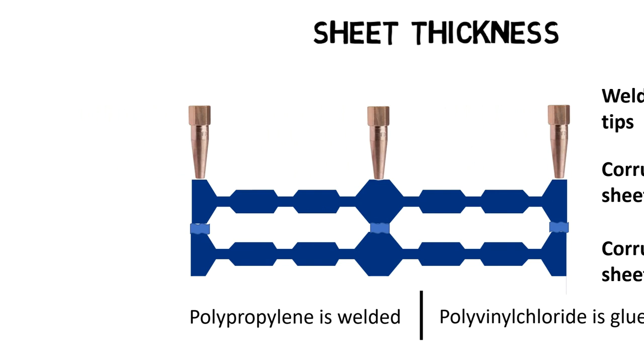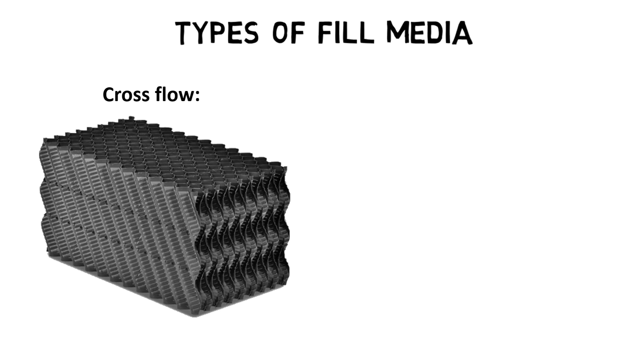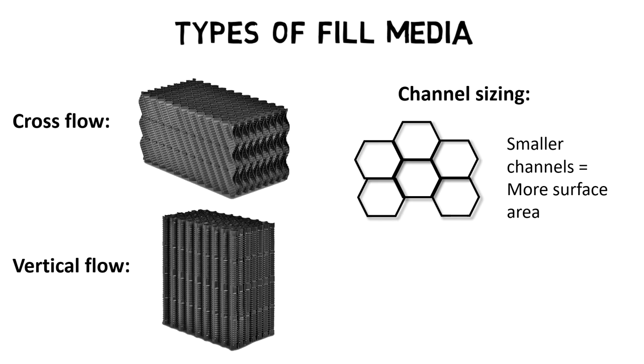Depending on the application and degree of wastewater pollution, several different plastic fill media designs are available. In general, they are divided into two categories: cross flow and vertical flow. Within the two categories, plastic fill media blocks differ by their channel sizing. Smaller channels mean more surface area, which equals more attached microorganisms and more treatment capacity. But at the same time, the risk of fill media channel clogging increases as the channels get smaller.